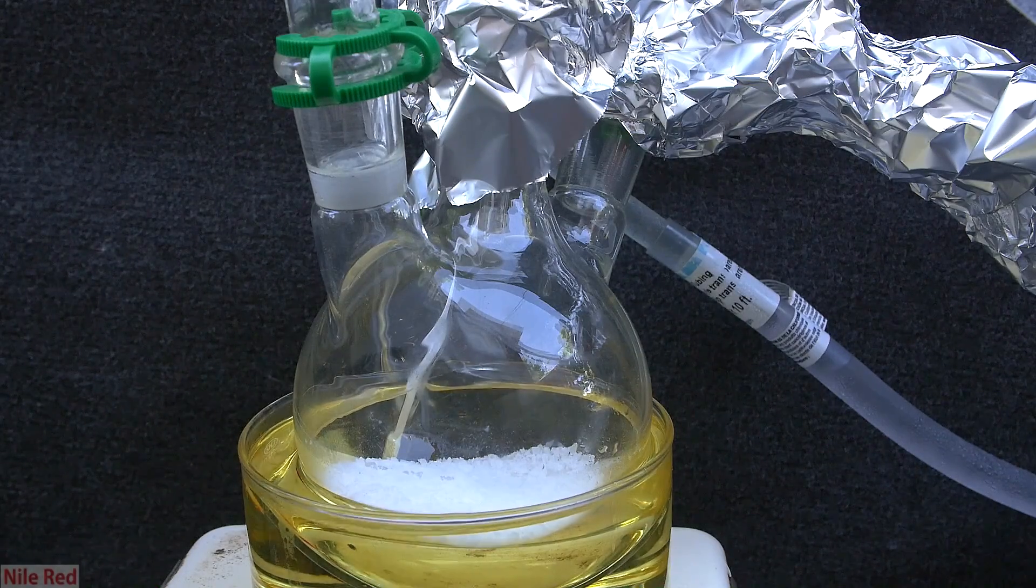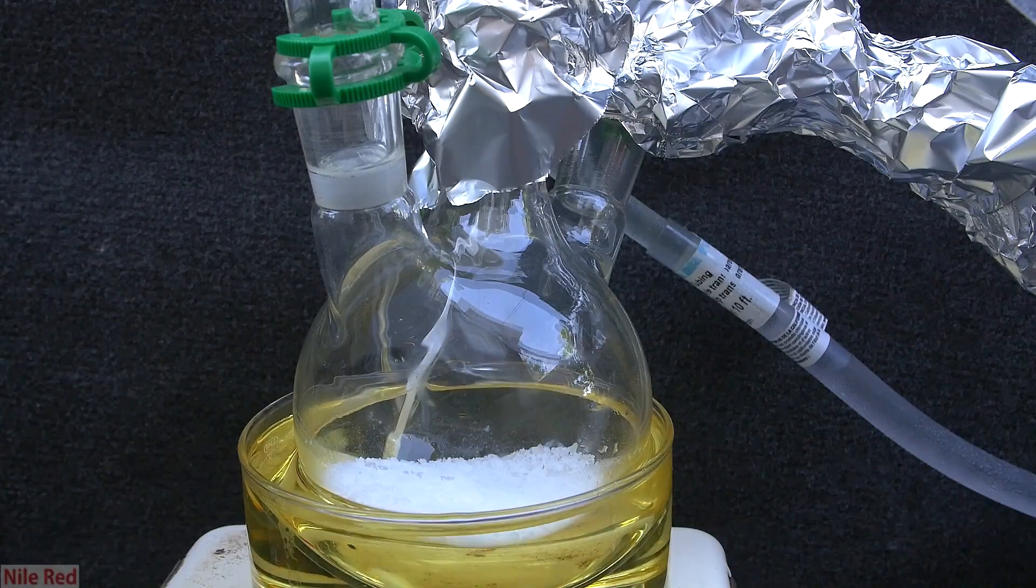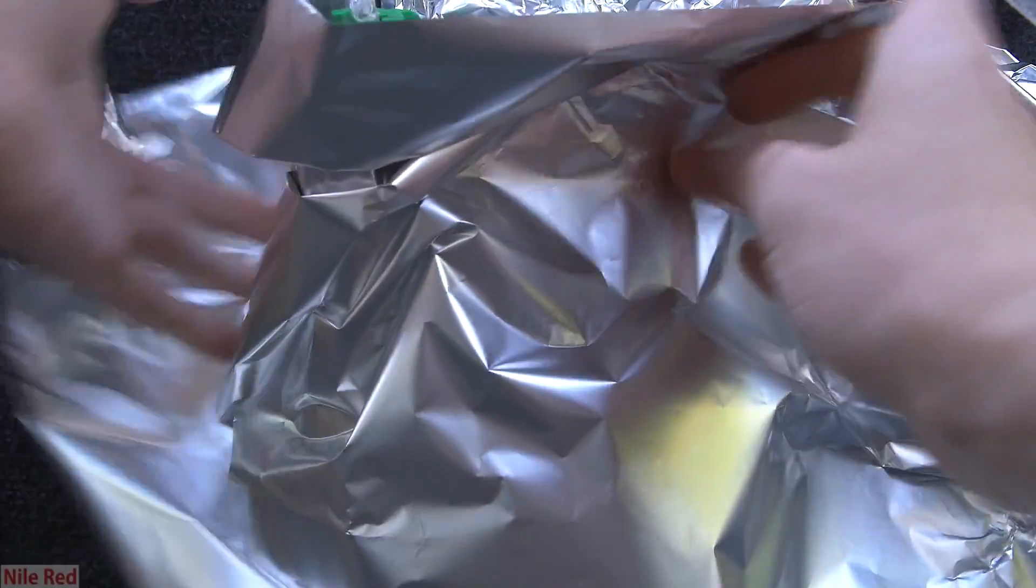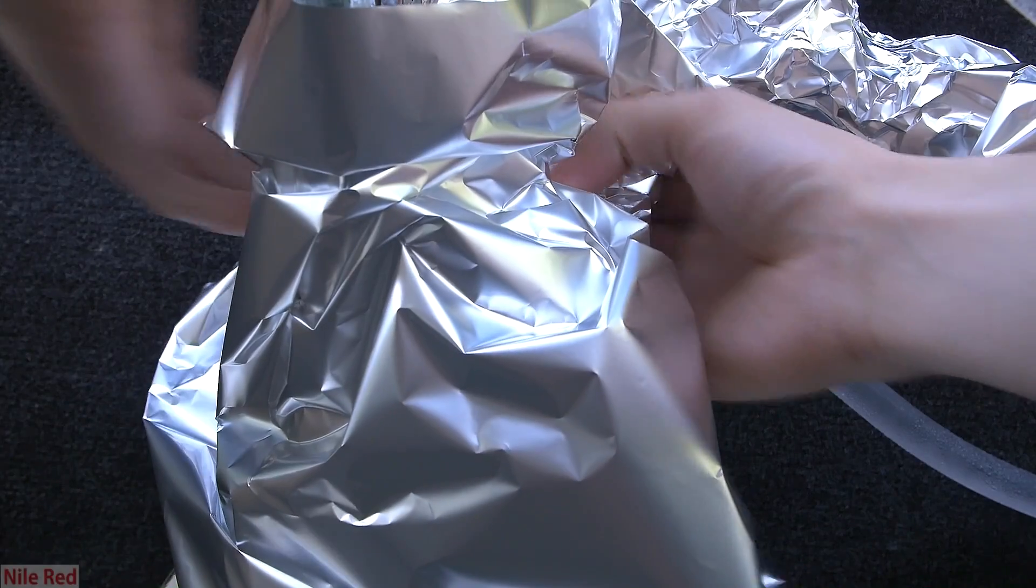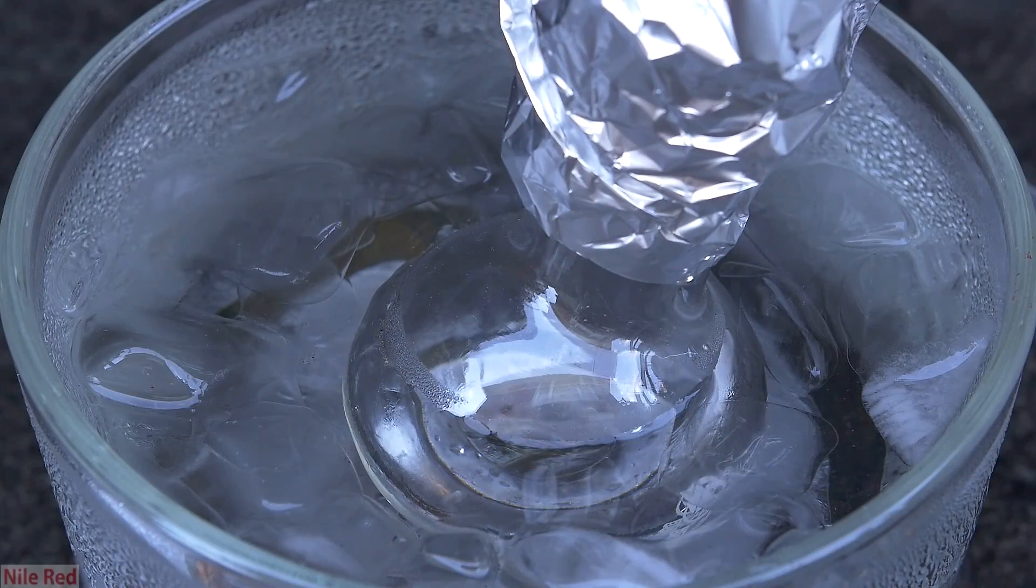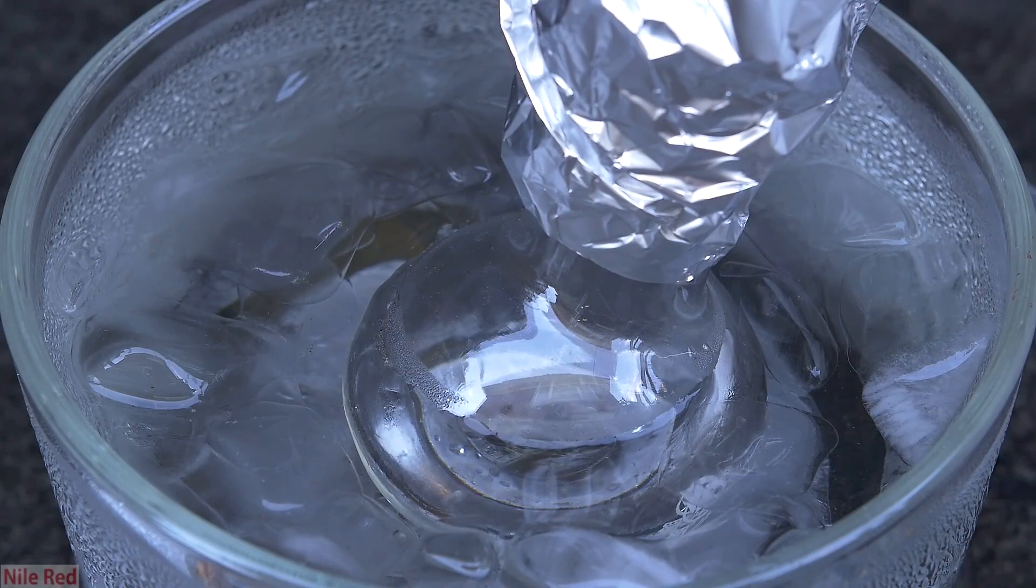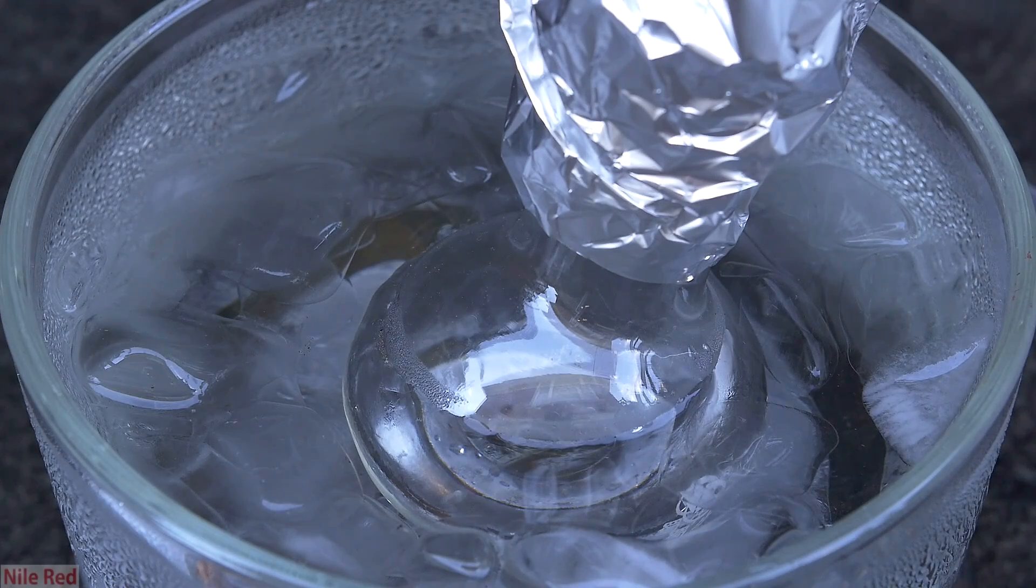At this point, some liquid starts to come over into our salt flask, and I decide to cover it with aluminum foil just to limit any polymerization. We wait a little bit, and not too long afterwards, we actually start to collect some stuff in our receiving flask.